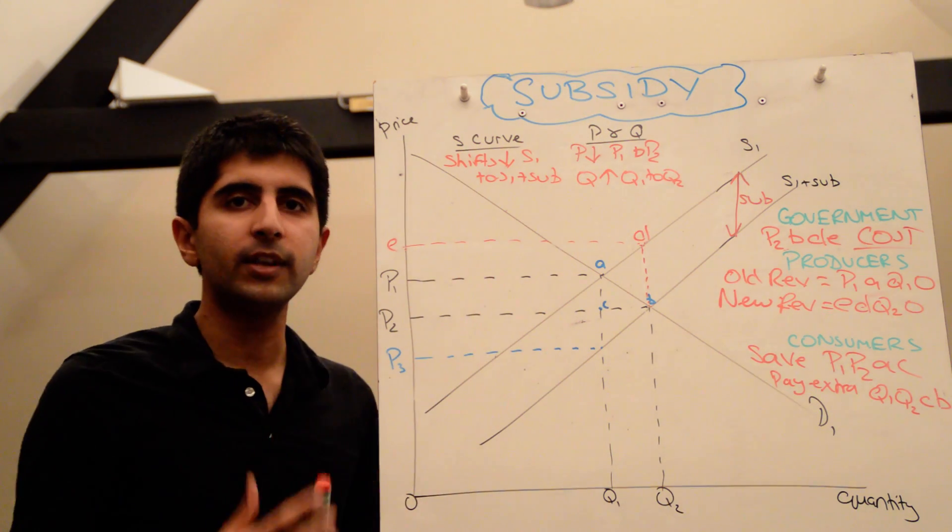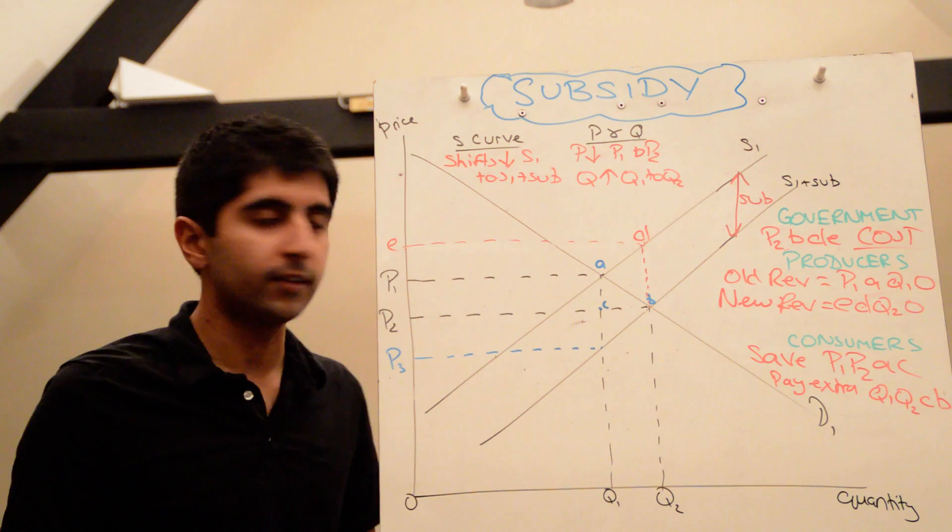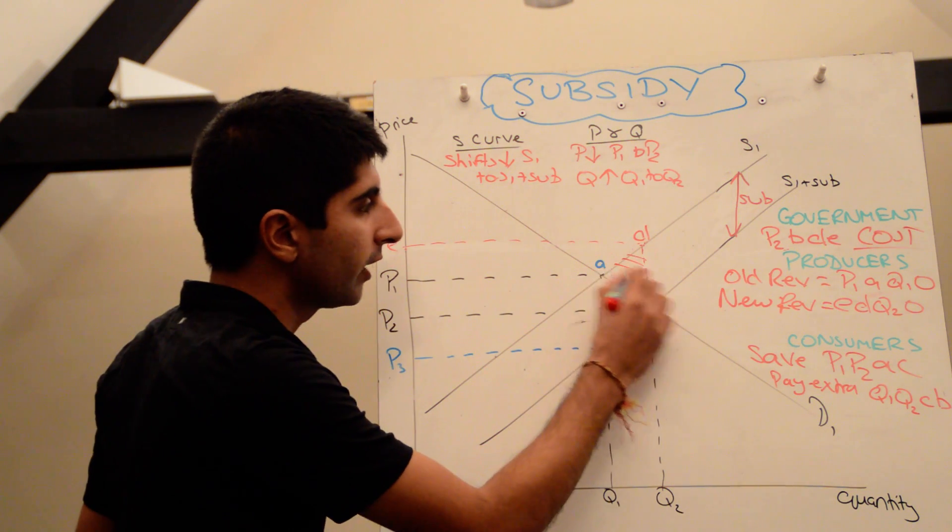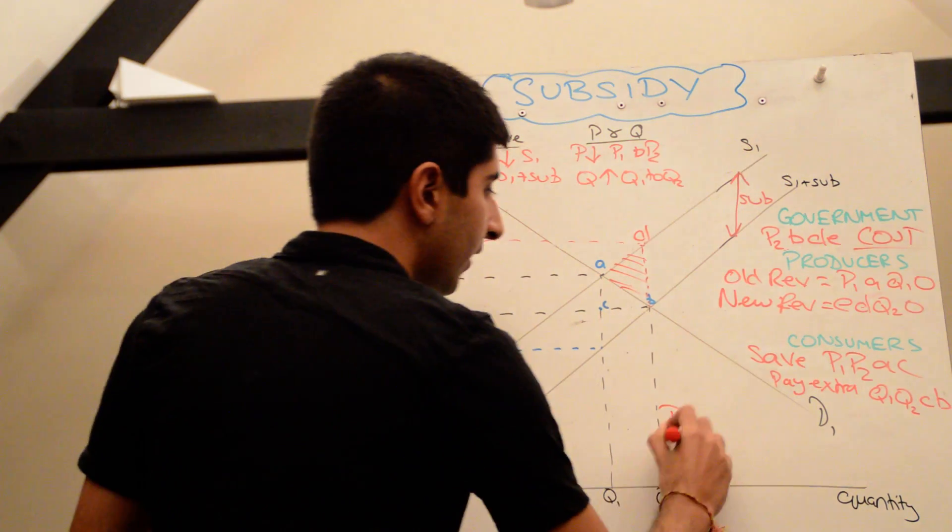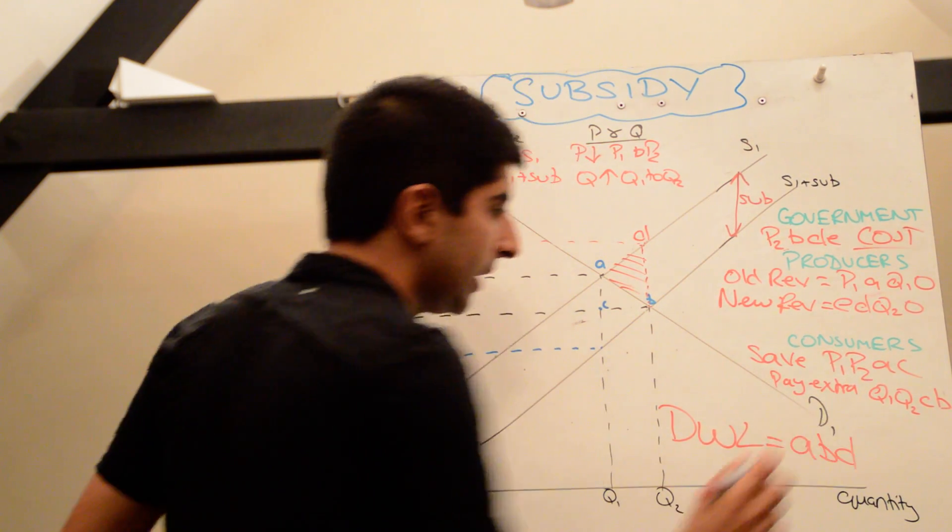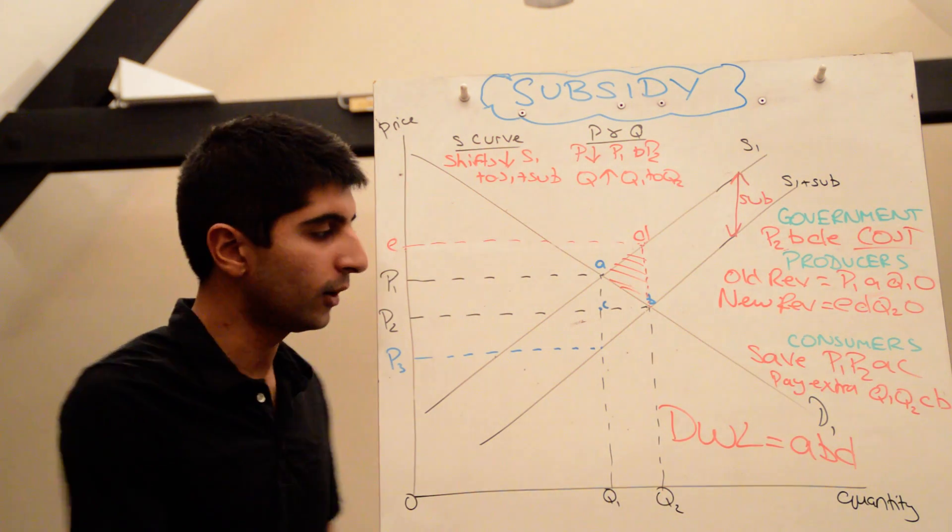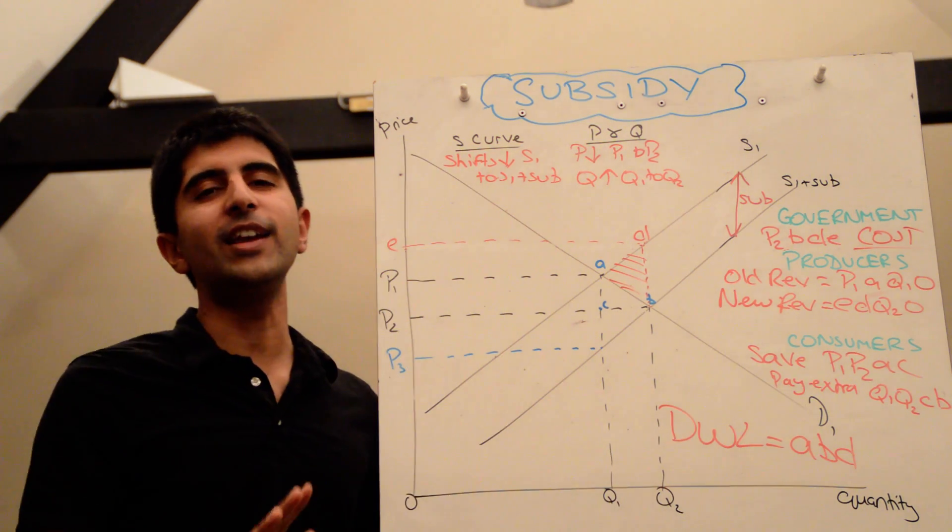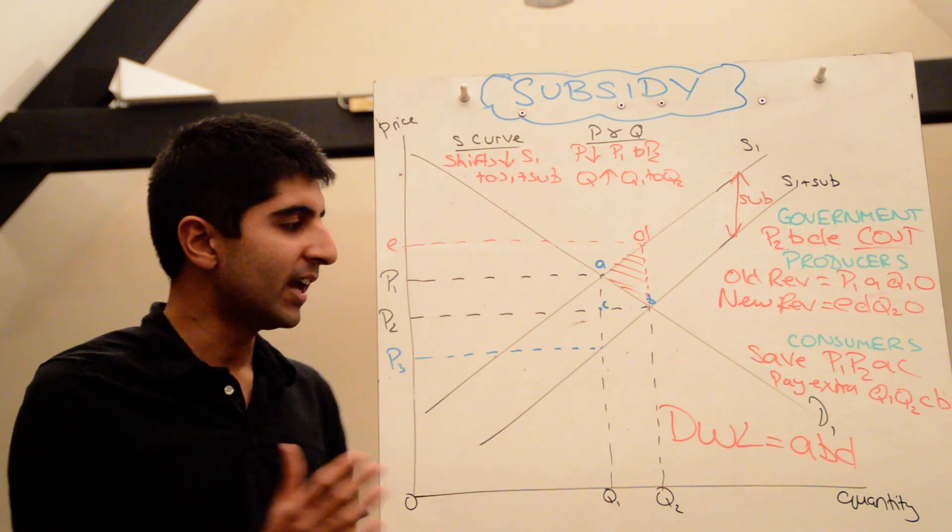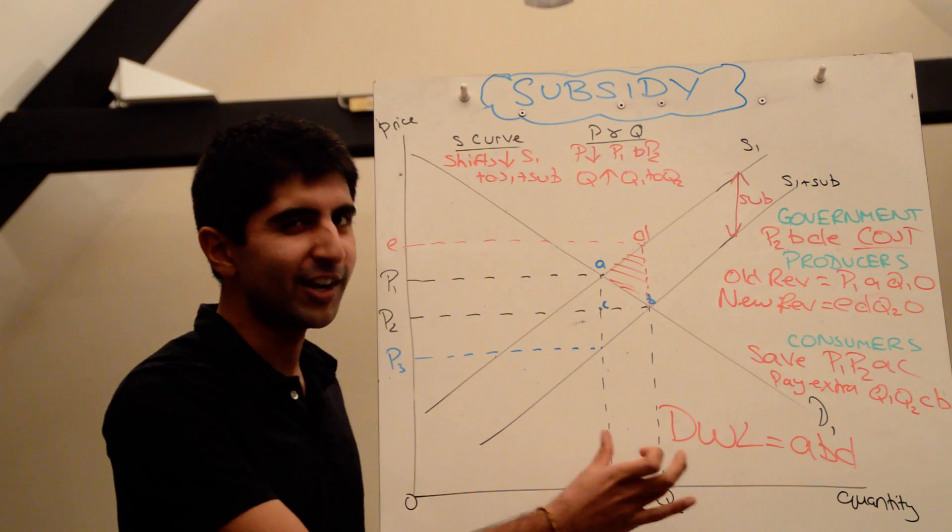And finally, because we are distorting market outcomes, a subsidy does also cause a deadweight loss to society equal to the triangle ABD. So there is a deadweight loss in society equal to ABD. Watch my video on why a subsidy causes a deadweight loss to understand that. A really very interesting, really stimulating idea here. Something to get your head around. And if you're a top economist, you will watch that video and you will understand.